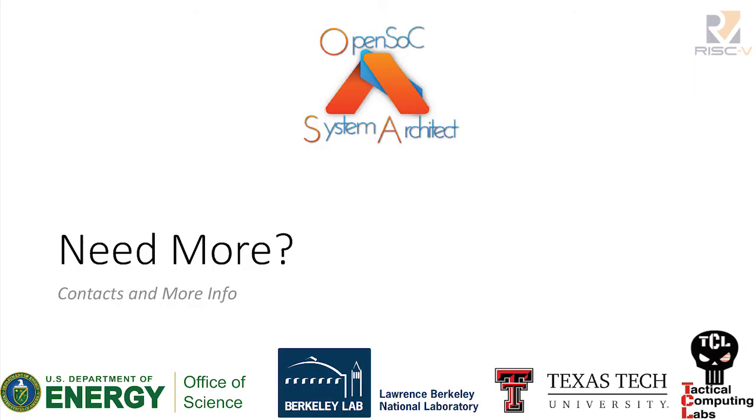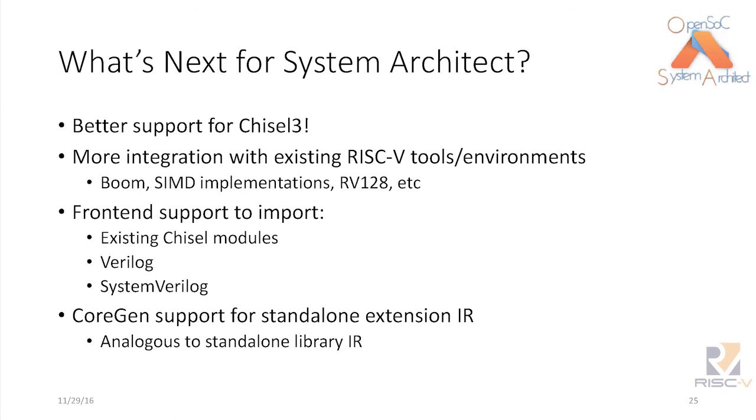Looking at what's coming up in the pipeline: we want to better support Chisel 3, integrate with existing RISC-V tools and environments, add BOOM to our system architect, support SIMD instructions, and add support for RV128. We also want to extend Chisel support at the front end so you can type in Chisel code, and add the ability to include any Verilog or SystemVerilog IP blocks directly in the front end. We also want a standalone IR extension so that if you just want a simple RISC-V core, you can just dump it in and it'll generate a simple core.